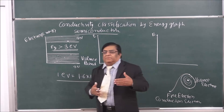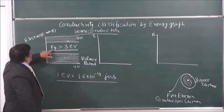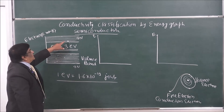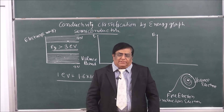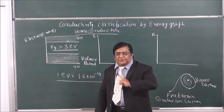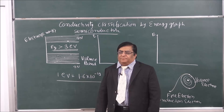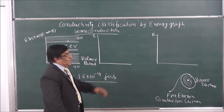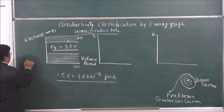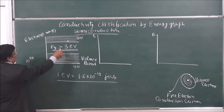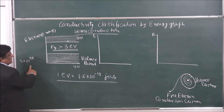If the energy given to one electron is more than 3 electron volts, it will go to the conduction band and start conducting electricity. But can we convert an insulator into a conductor by giving it that much energy? Theoretically it appears possible, but practically it is not, because the number of electrons is very large — more than 10²⁸ per cubic meter — and giving each 3 electron volts requires an enormous total energy.